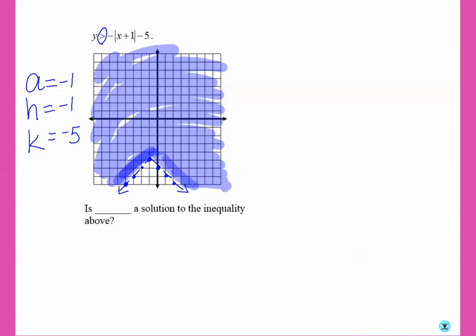So that's our graph. So let's pick a point. I'm going to choose the point 0, negative 5. Is 0, negative 5 a solution to the inequality? So if we go to 0, negative 5, or actually let's do negative 6. We're right here. That point is along our dotted line. Therefore, it is not a solution.